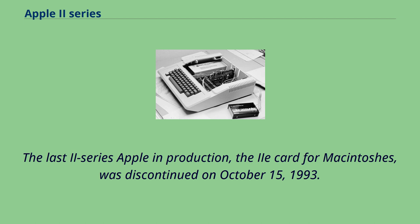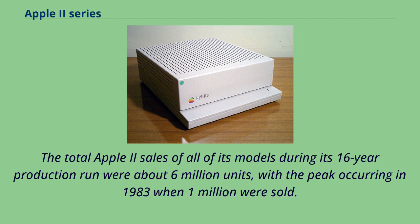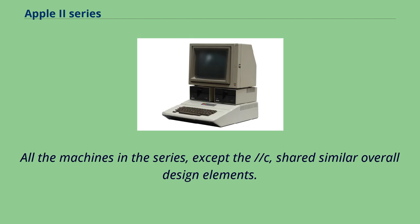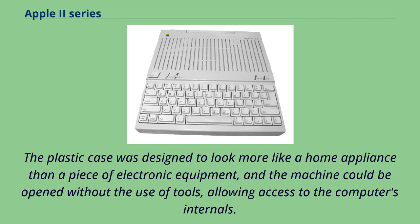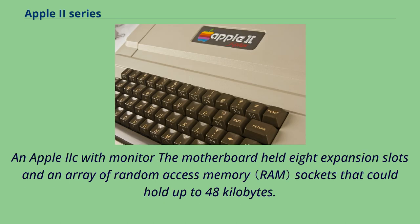Total Apple II sales during its 16-year production run were about 6 million units, with the peak occurring in 1983 when 1 million were sold. All machines in the series, except the //c, shared similar overall design elements. The plastic case was designed to look more like a home appliance than electronic equipment, and could be opened without tools, allowing access to the computer's internals. The motherboard held eight expansion slots and an array of RAM sockets that could hold up to 48 kilobytes.